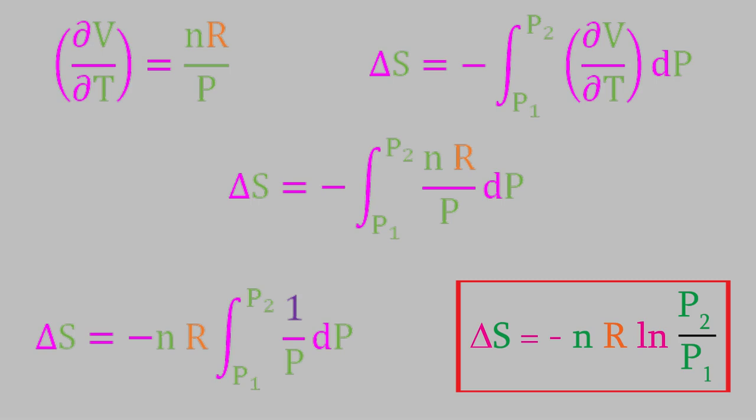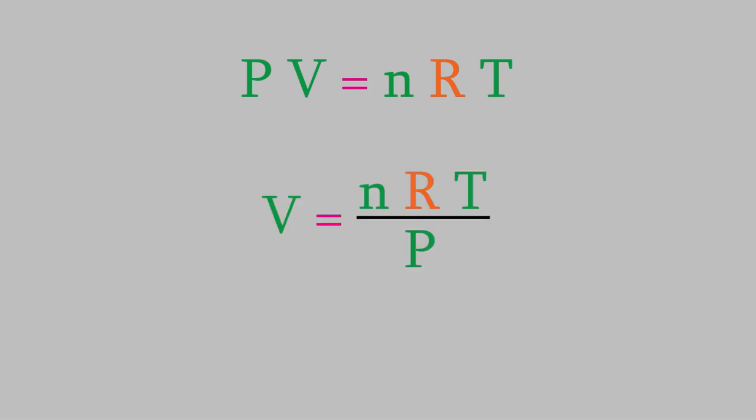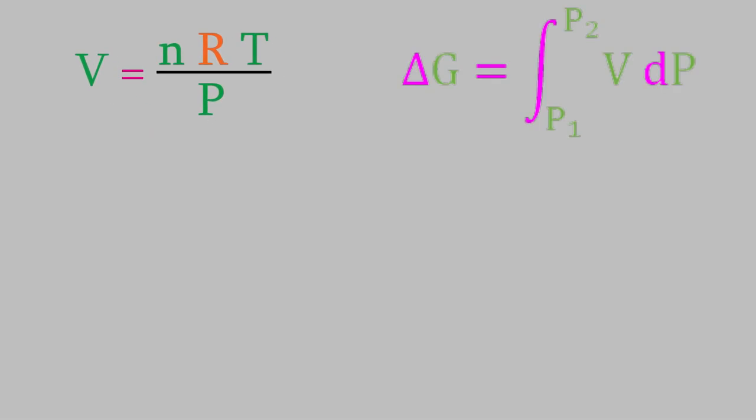There's one more especially useful expression we can get thanks to Maxwell relations. Back when we were deriving the Maxwell relation we got from the Gibbs free energy in the last video, one of the equations we got as an intermediate step was this one. If we rearrange the expression to solve for dG, we get this. We can change the left side to delta G by taking the integral of the right side. We can't solve this integral yet, because V isn't a constant. Remember, the partial derivative we started with told us that we had conditions of constant temperature, not constant volume. If the system is an ideal gas, we can solve the ideal gas law for V. If we now substitute this for V in the integral, we can solve it.